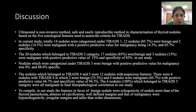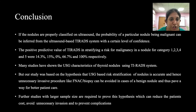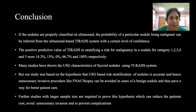In our study, features favoring a benign nodule were echogenicity greater than the thyroid parenchyma, absence of calcification, and well-defined margins. Features favoring malignancy were hypoechogenicity, irregular margins, and taller-than-wide dimensions. The positive predictive value of TIRADS in stratifying malignancy risk for categories 1, 2, 3, 4, and 5 were 14.3%, 15%, 0%, 66.7%, and 100% respectively.